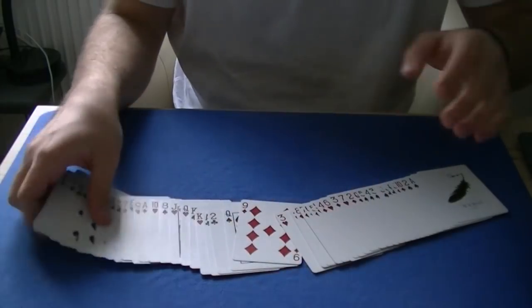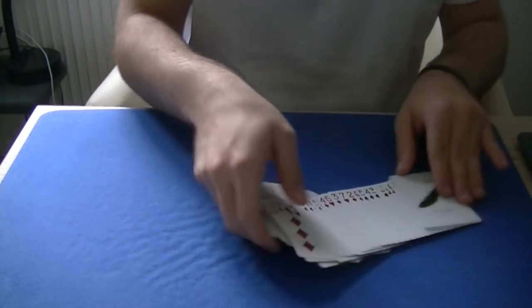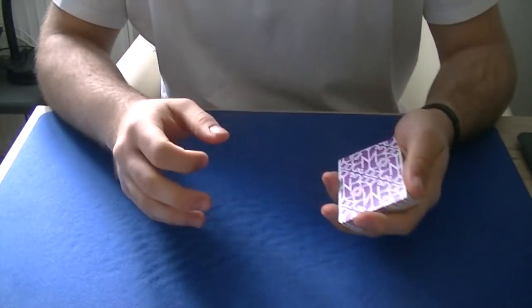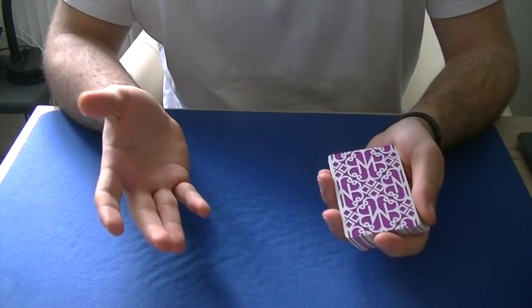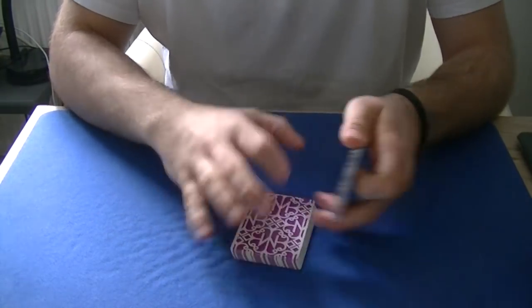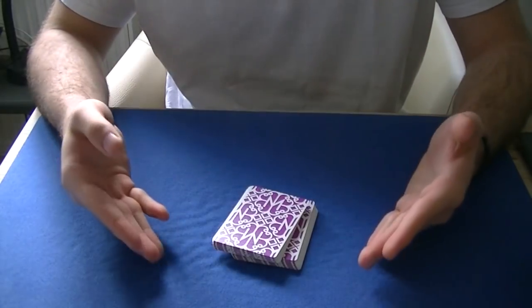However instead of revealing it immediately after you have placed the deck together you are gonna give the deck some seemingly shuffles. The shuffles you are allowed to do include giving the pack a cut. The cut will not disturb your trick.